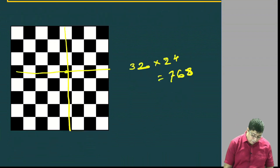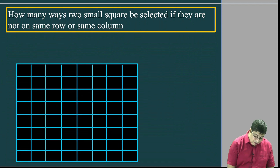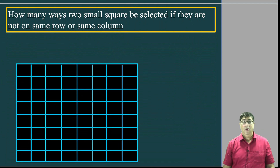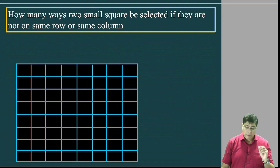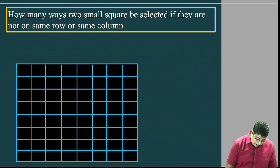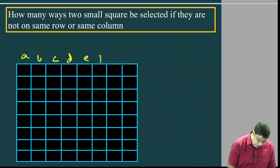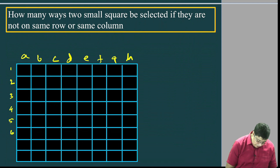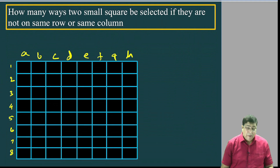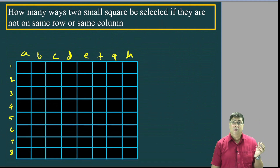In how many ways can two small squares be selected if they are not on the same row or same column? They can be white or black. Suppose we label columns A, B, C, D, E, F, G, H and rows 1 through 8. We need to identify the cell and ensure the selected squares are not on the same row or same column.